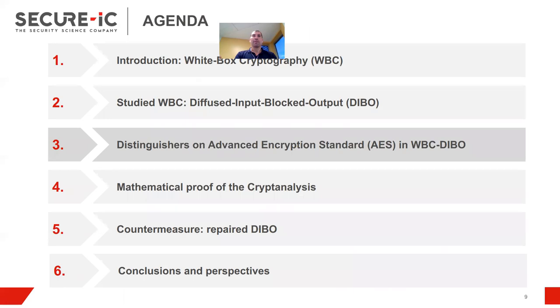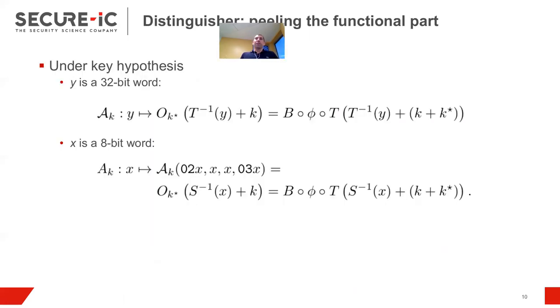I will show that in more than 99% of the cases, this construction can be broken, actually, and you can extract K*. So how does attacks work? So the idea is pretty simple. For all key hypotheses, like K, we peel, so from the obfuscated function, we peel the functional part. And so we aim to check whether it is looking like a DIBO.